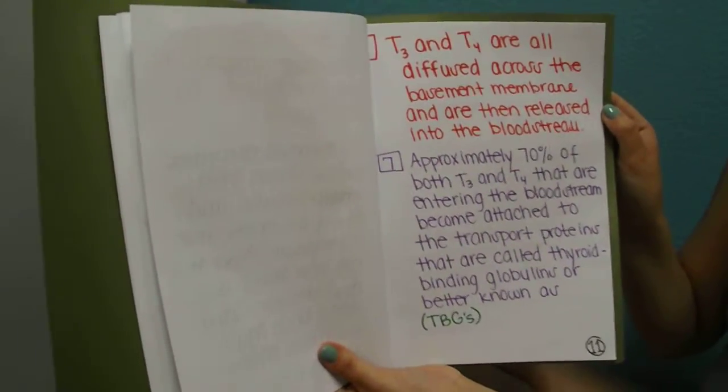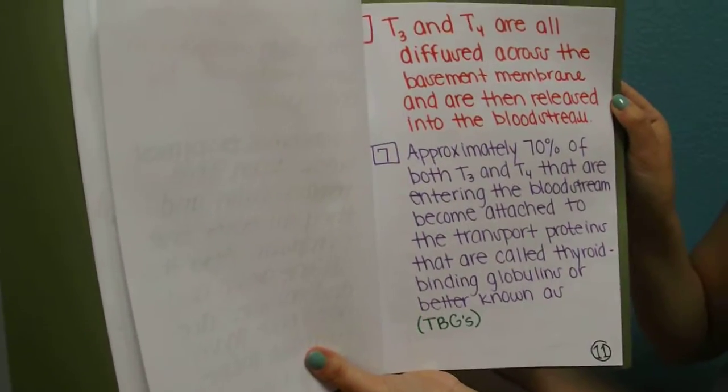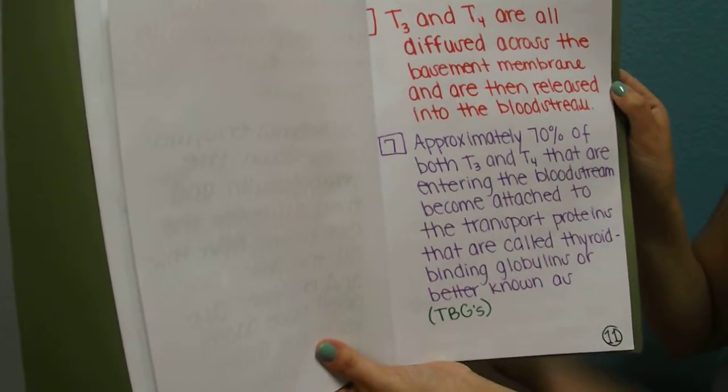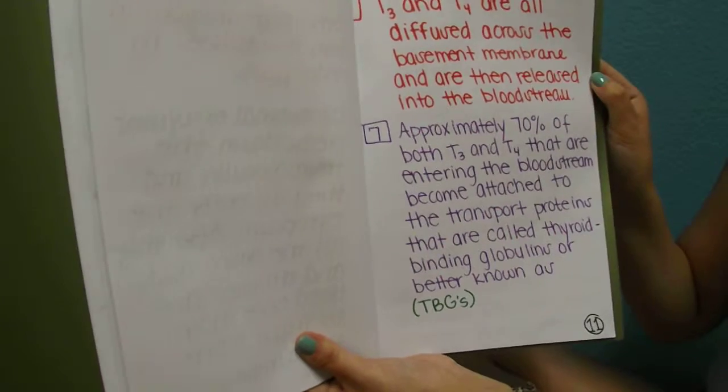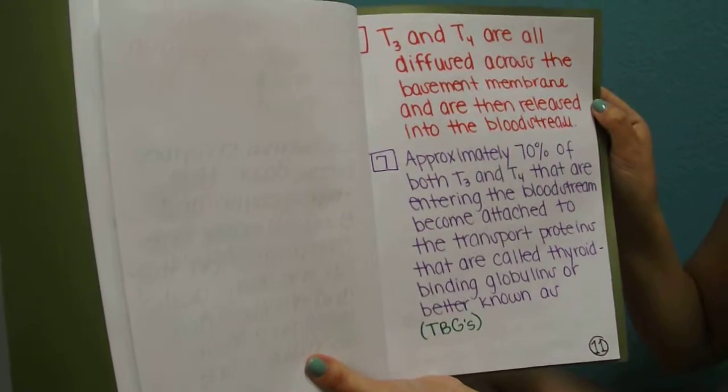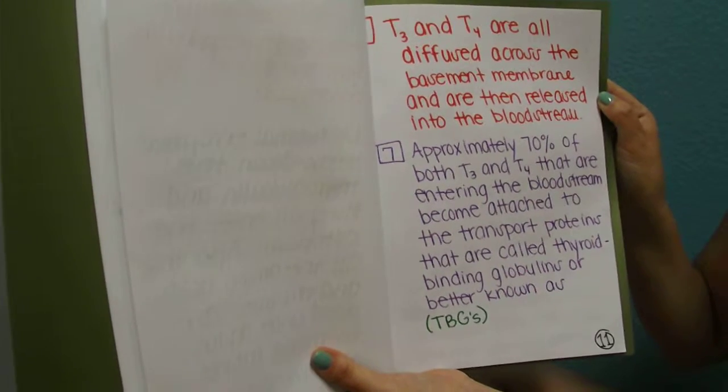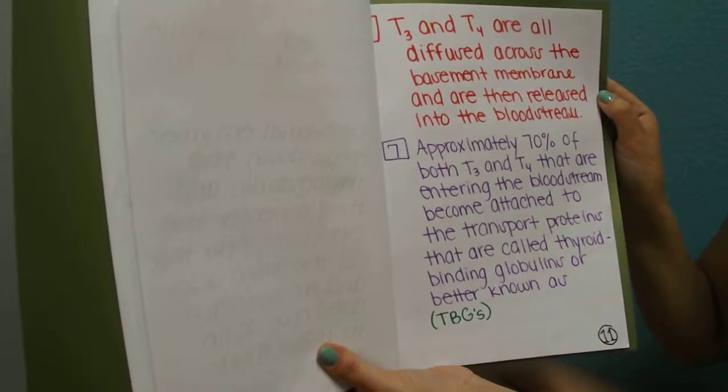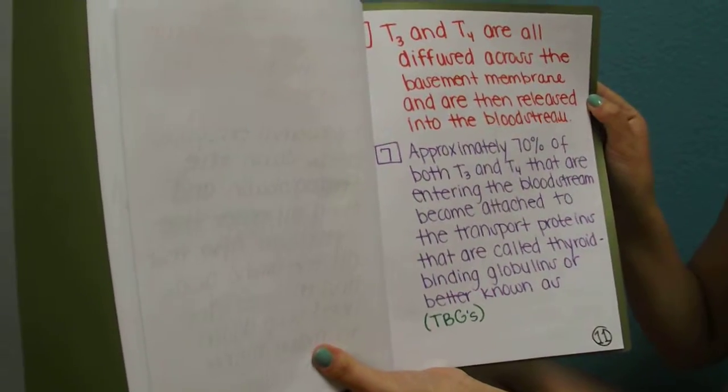In step six, T3 and T4 are all diffused across the basement membrane and are then released into the bloodstream. Step seven, or the last step, approximately 70% of both T3 and T4 that are entering the bloodstream become attached to the transport proteins that are called thyroid-binding globulins, or better known as TBGs.